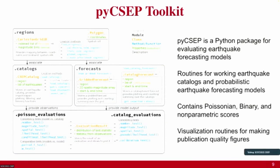PyCSEP really provides all what you'd call the business logic — all the science code you'd use to evaluate a forecast. It gives you ways of representing forecasts, ways of plotting forecasts, ways of specifying spatial regions, different types of evaluation methods, and different ways of specifying and working with catalogs. All these tools come together to help us evaluate earthquake forecasting models. There are specific ways of representing UCERF3 forecasts, so it's quite easy to load in a UCERF3 forecast and work with all the data like you're working with NumPy arrays, and plotting them up is really easy.